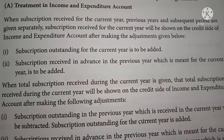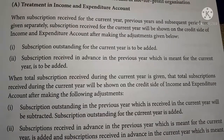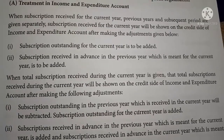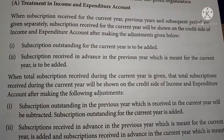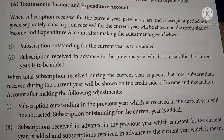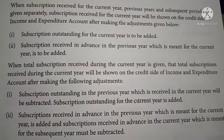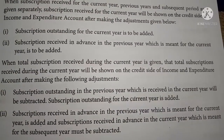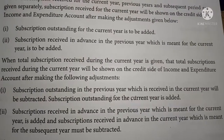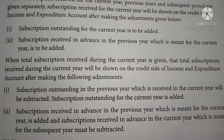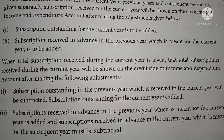When the total subscription received during the current year is given, the following adjustments are made: subscription outstanding in the previous year received in the current year is subtracted; outstanding subscription for the current year is added; subscription received in advance in the previous year meant for the current year is added; and subscription received in advance in the current year meant for the next year is subtracted.